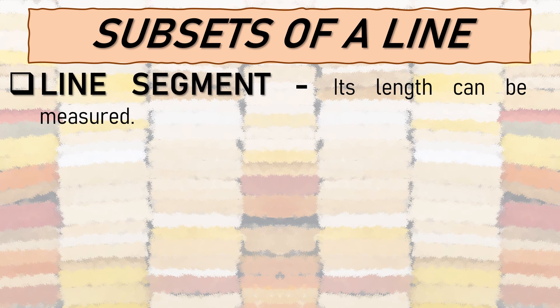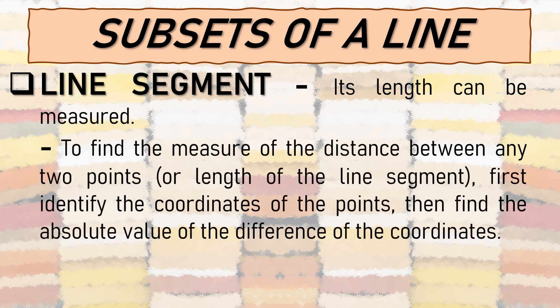Since the length of a line segment can be measured, to find the measure of the distance between any two points or the length of a line segment: first, identify the coordinates of the points; then find the absolute value of the difference of the coordinates. We need to know the coordinates of the two points and then find the absolute value of their difference.